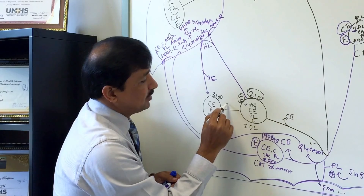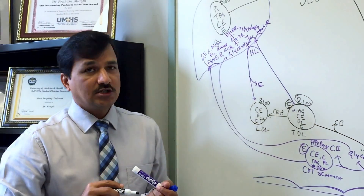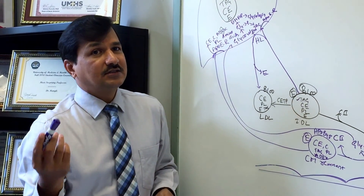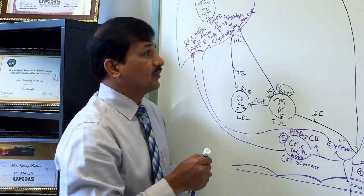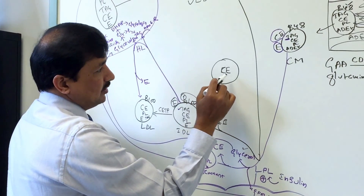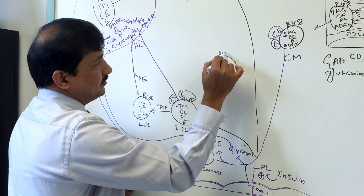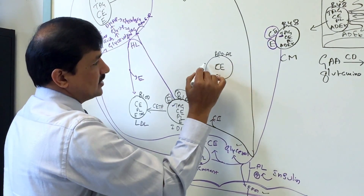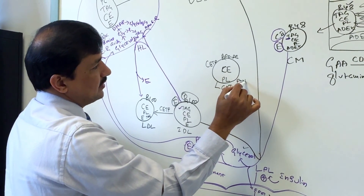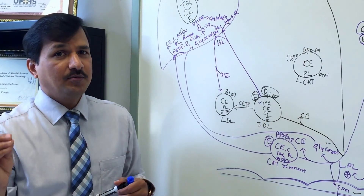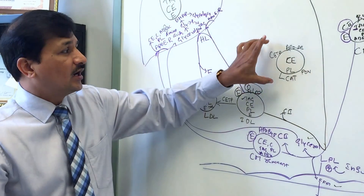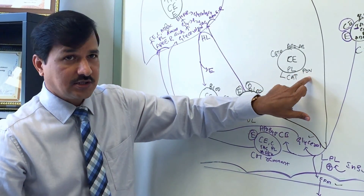The third fate of IDL involves a reaction catalyzed by CETP — cholesterol ester transfer protein. Let me explain the composition of HDL3: it is rich in cholesterol ester in the center, has phospholipid, and on the surface has ApoA1. It also has three enzymes on the surface: CETP, LCAT, and paraoxonase. HDL contains all apolipoproteins except ApoB100 and ApoB48.